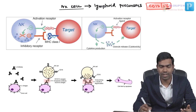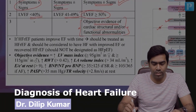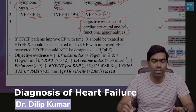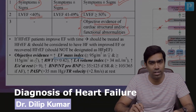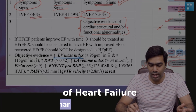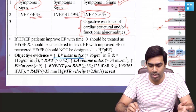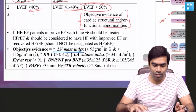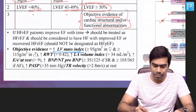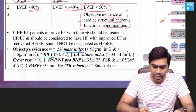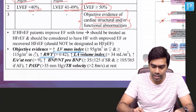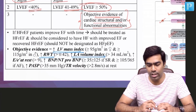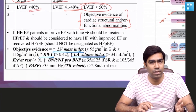You can remember it as 'Sexy 16' for natural killer cells. Now, what are the objective evidence of structural and functional cardiac abnormality? For example, there could be increased LV mass index of more than 95 grams per meter square in females, or more than 115 grams per meter square in males, or there could be increased relative wall thickness of more than 0.42, or increased LA volume index of more than 34 mLs per meter square.